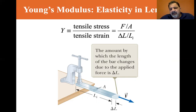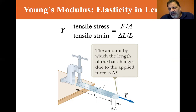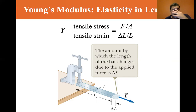One Pascal is one Newton per square meter. A square meter is a very large area — one Newton is roughly about a hundred grams. So if you imagine a hundred grams on a large one-meter sheet, that's not much pressure.